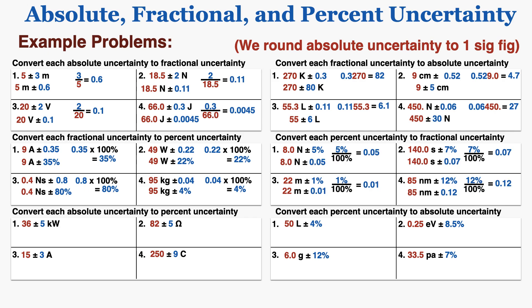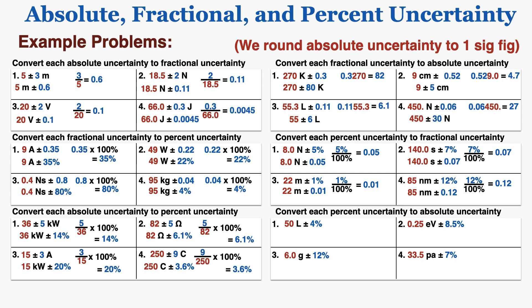I can also take two steps to convert each absolute uncertainty directly to percent uncertainty: first convert from absolute to fractional by dividing by the original number, then convert from fractional to percent by multiplying by 100%. When I do that, I get these values, and again I move the unit to the correct spot in each number.